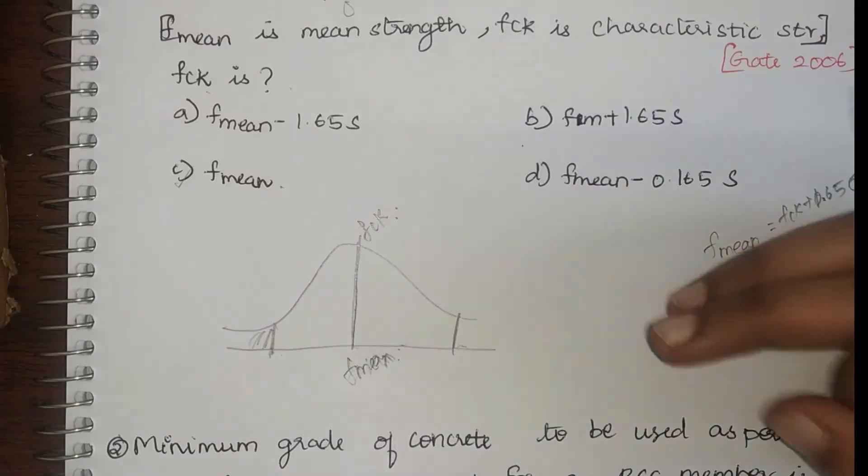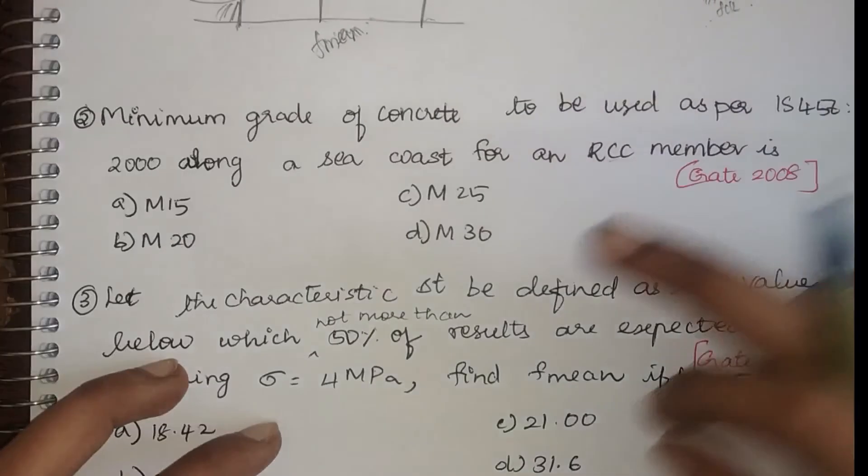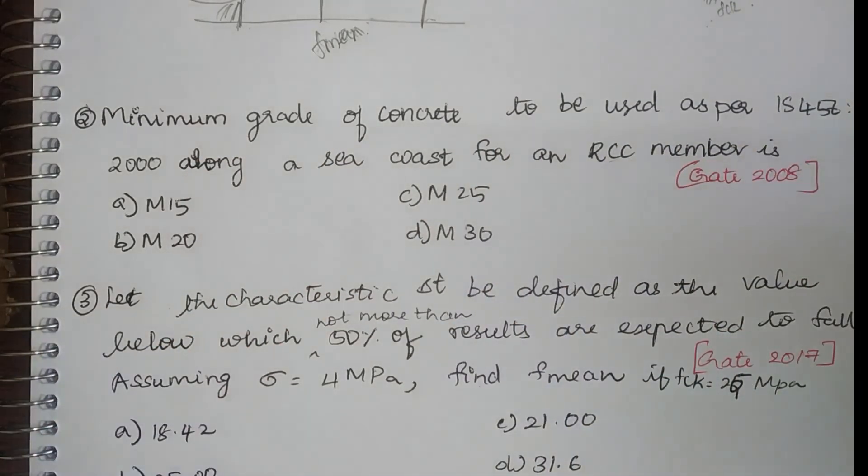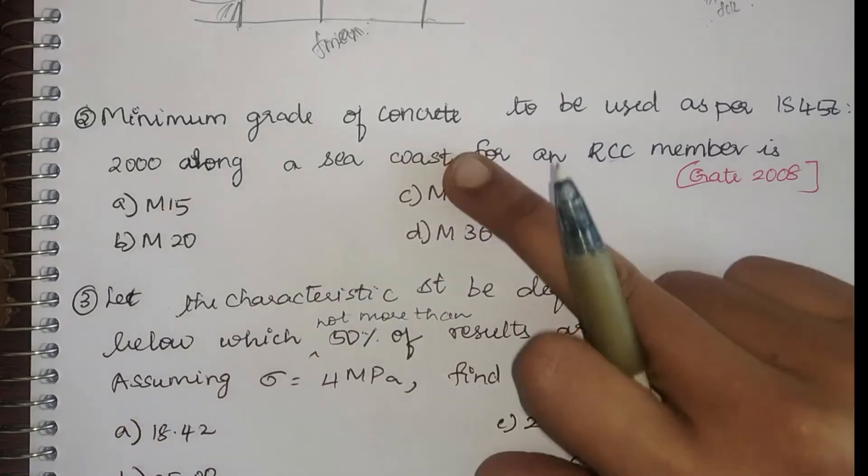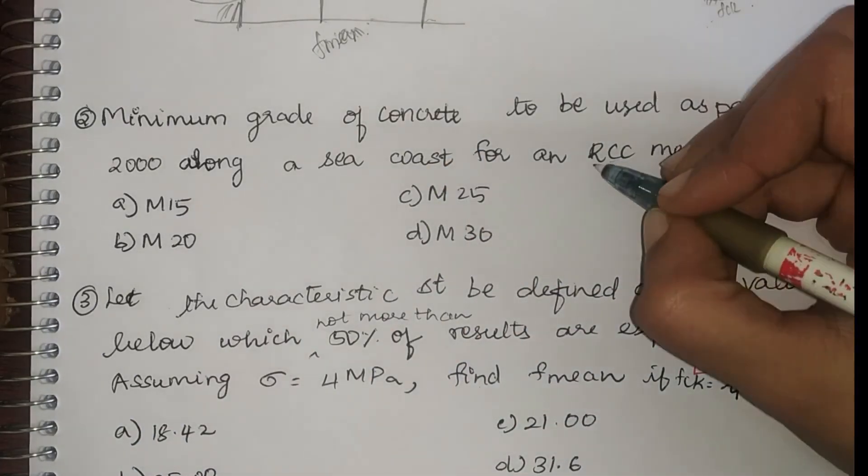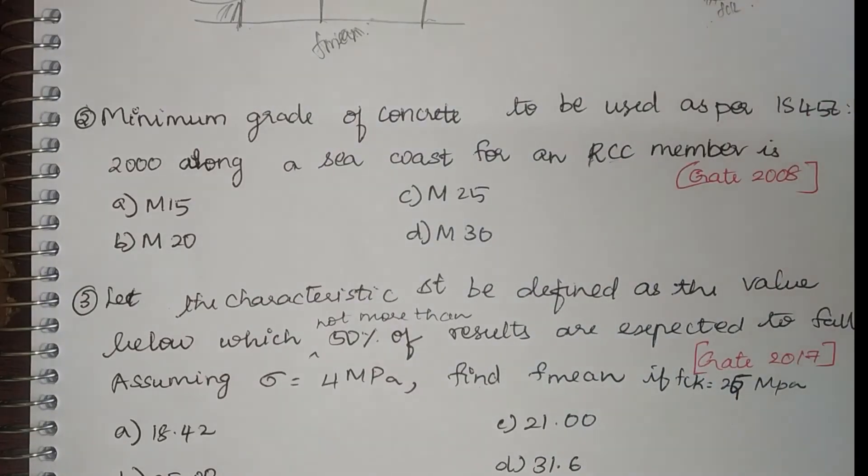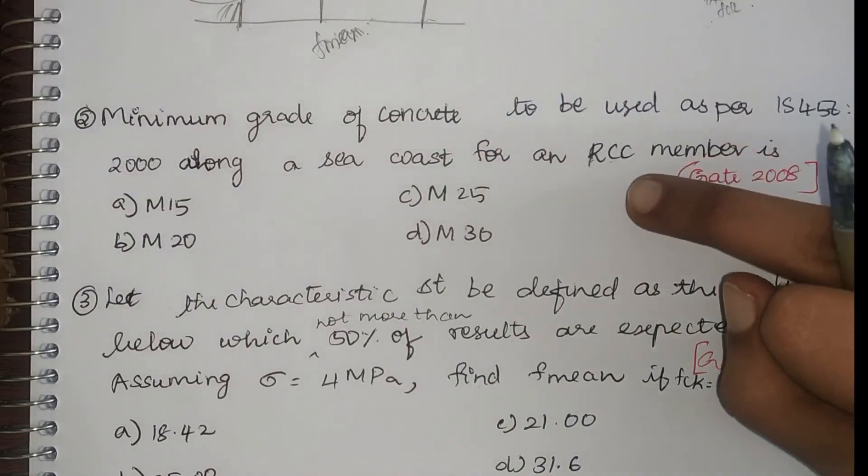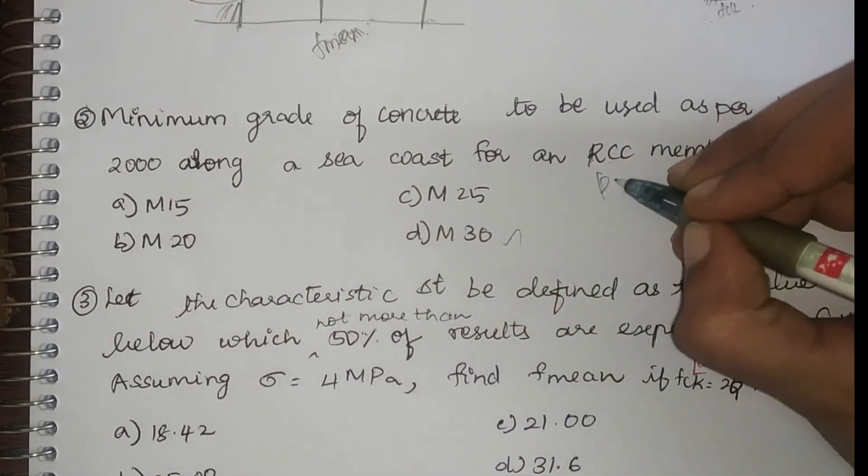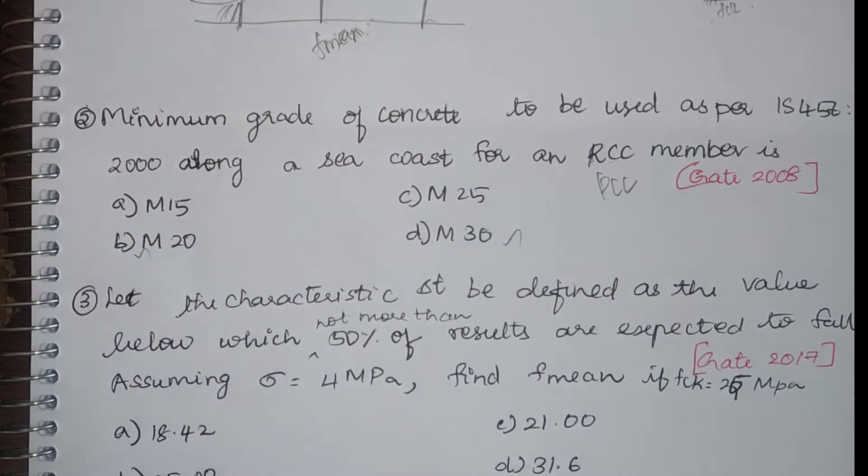Next question: the minimum grade of concrete to be used as per IS 456 2000 along the sea coast for an RCC member is what? So this is a direct question. We have already seen the table. For RCC member along the sea coast, the minimum grade is M30. If it had been PCC, it would be M20.